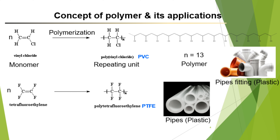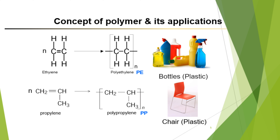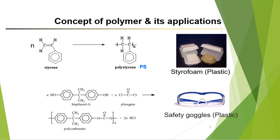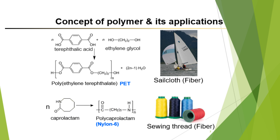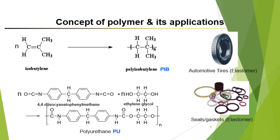Examples of polymer applications: PVC is used for pipe fittings, PTFE for pipes, PE and PP for different applications, polystyrene and polycarbonate for their respective uses. These cover six plastics. The two fibers are PET and nylon 6, with their respective applications. The last two are elastomers, which have rubber-like properties: PBD is used for automotive tires and PU for those cascade applications.